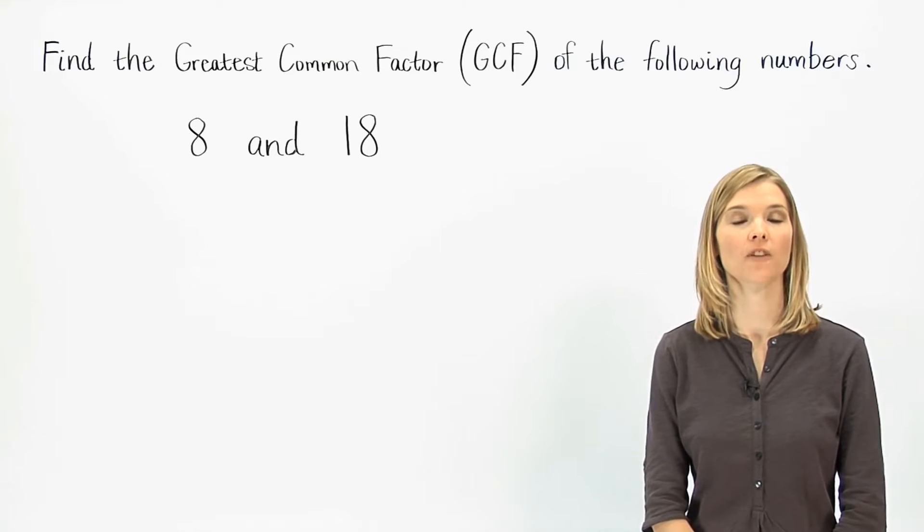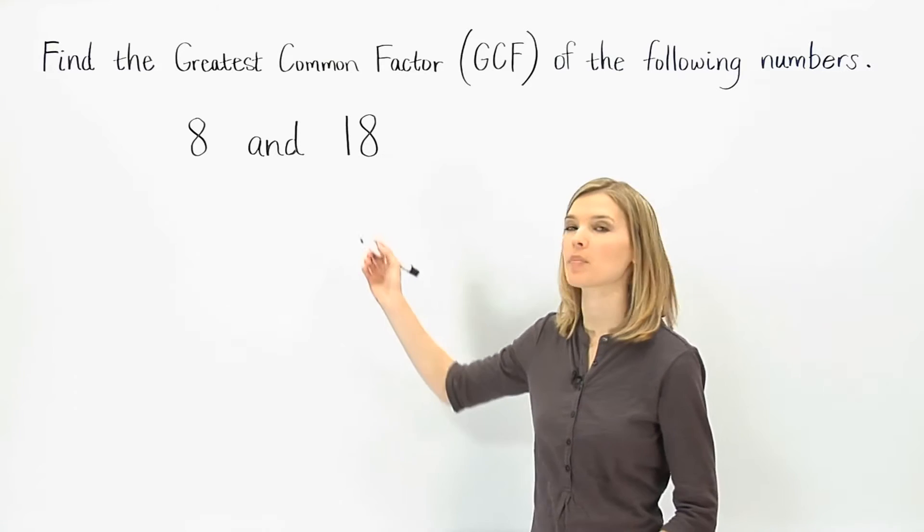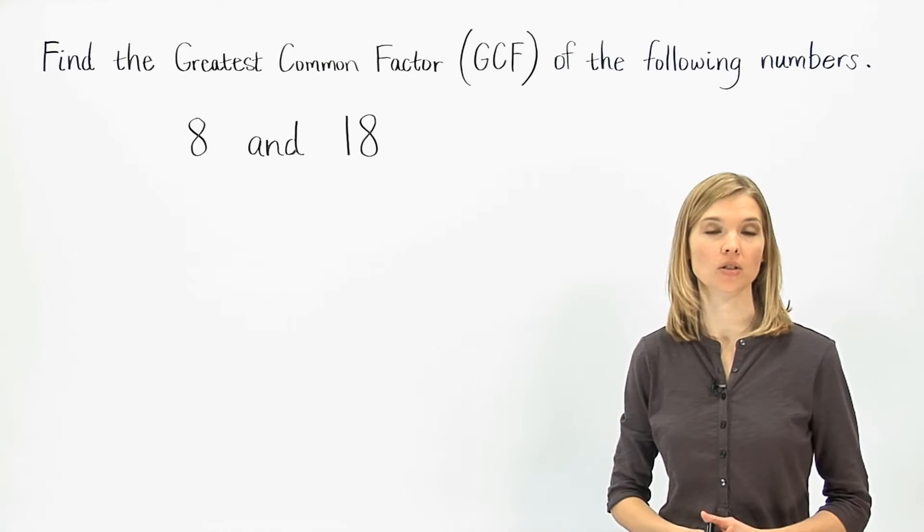To find the greatest common factor, or GCF, of 8 and 18, we begin by finding all of the factors of each number.